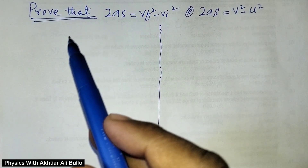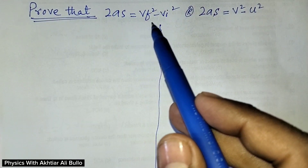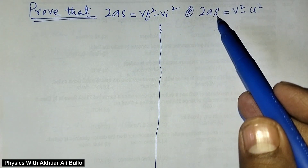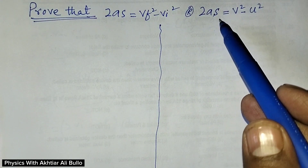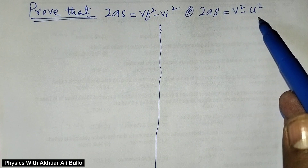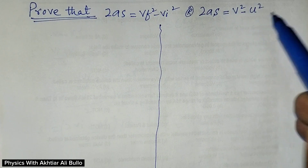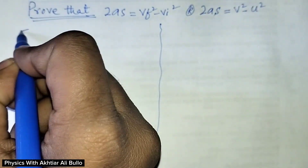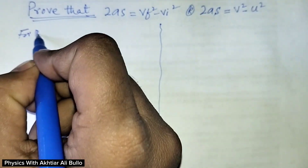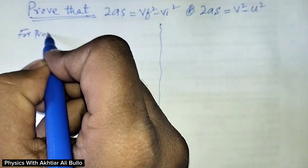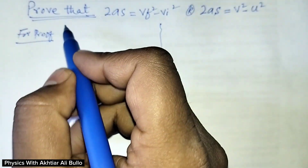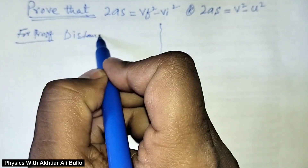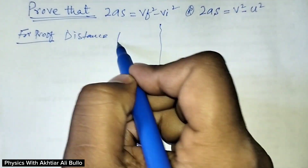Proof that 2As is equal to Vf squared minus Vi squared. So for proof, we will use the distance formula.